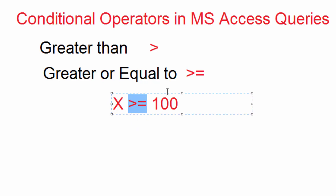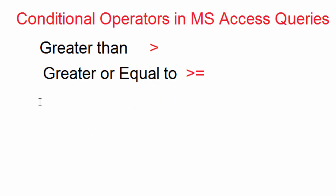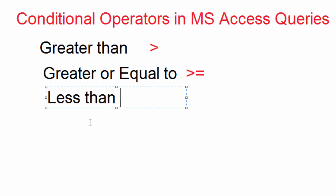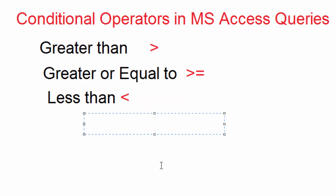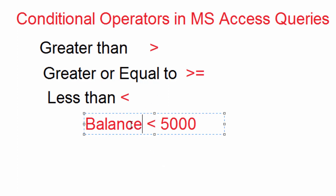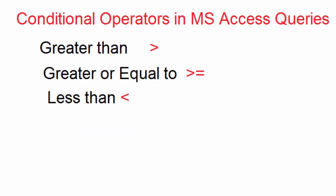The next operator is less than. The less than sign is written like this and it is just the opposite of the greater than sign. For example, I can say: check if balance is less than 5000. Here we are checking a certain amount in the balance and comparing it with 5000, confirming if it is less than 5000.